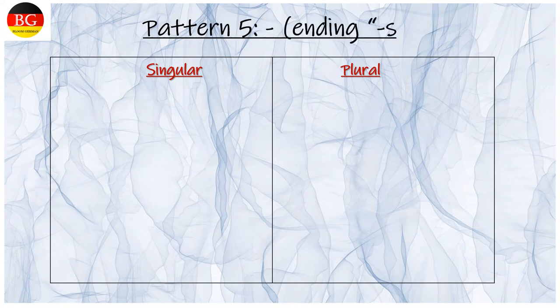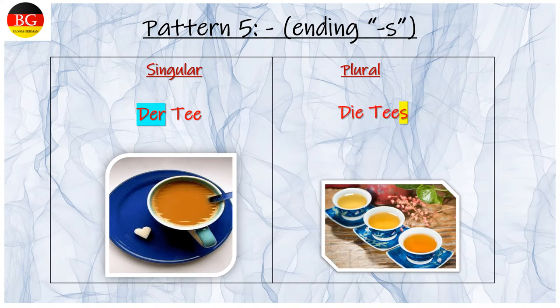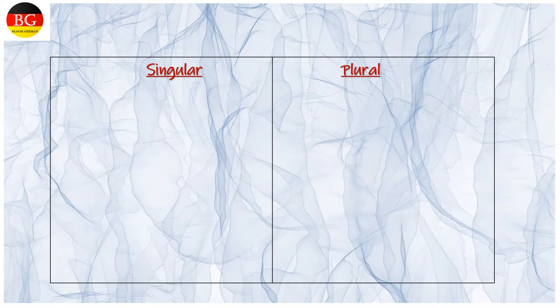Pattern 5: Ending S. Zum Beispiel: der Tee, die Tees. Ending S is getting added. Definite article changes.